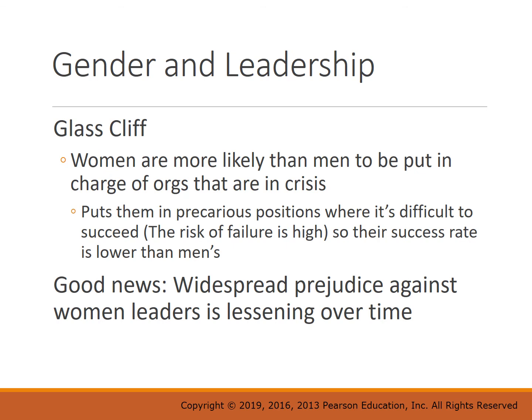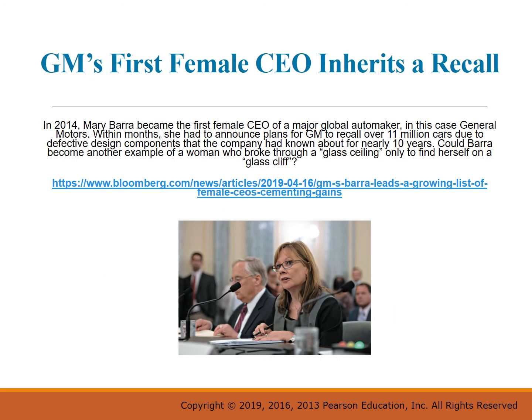Another phenomenon is the glass cliff — where women are more likely than men to be put in charge of organizations that are in crisis, placing them in precarious positions where it's difficult to succeed because the risk of failure is high. The good news is that widespread prejudice against women as leaders is lessening over time. GM's first female CEO, Mary Barra, is considered by Bloomberg as someone who was able to withstand the glass cliff and is seen as amazingly successful in her leadership of GM.